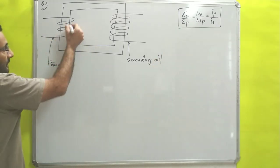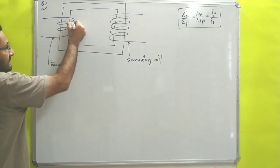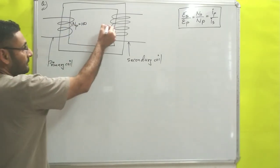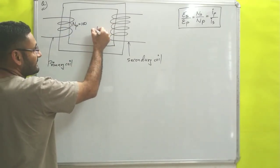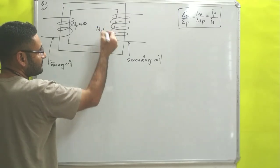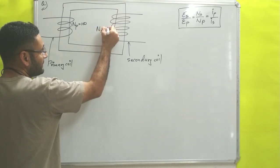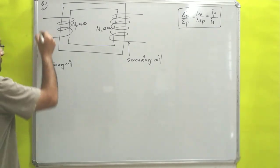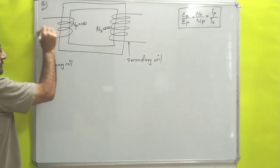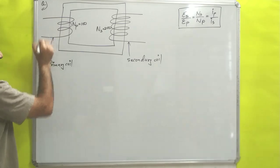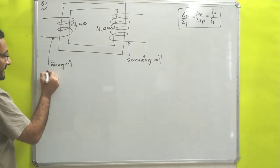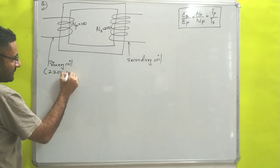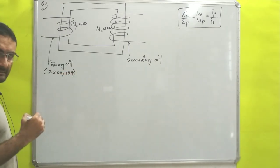The number of turns in the primary coil is given as 100, and the number of turns in the secondary coil is given as 200. The voltage input on the primary side is given as 220 volts at 10 amperes.